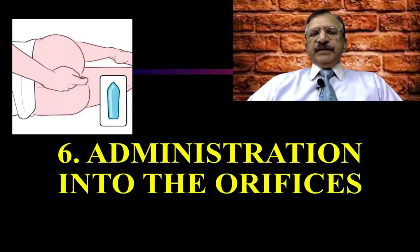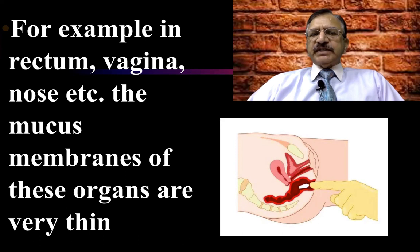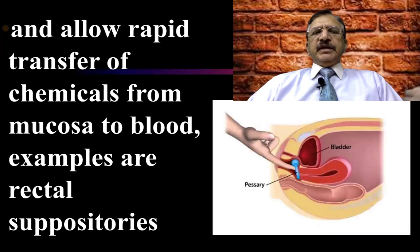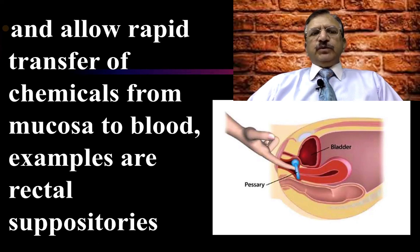Then there is administration into the orifices — for example, into the rectum, vagina, nose, etc. The mucous membrane of these organs is also very thin, and it allows rapid transfer of chemicals from the mucous membrane to the blood.